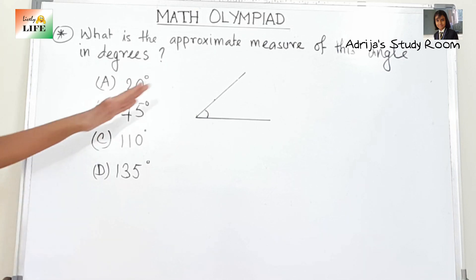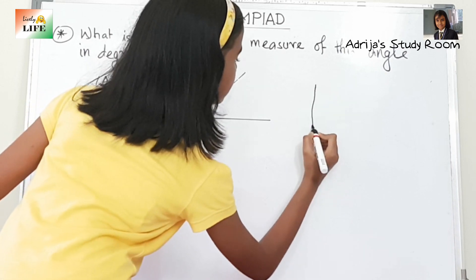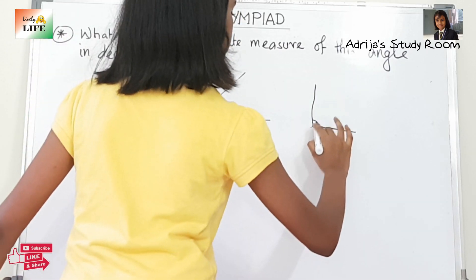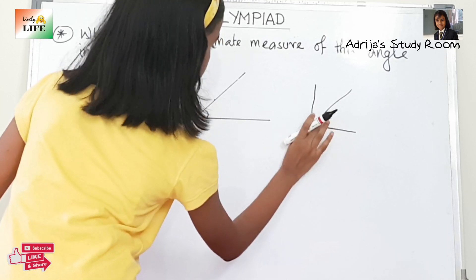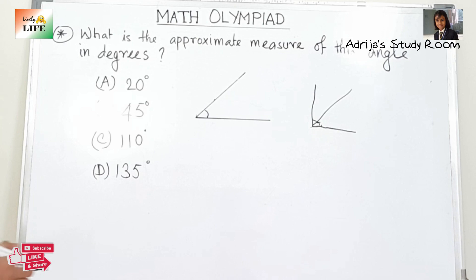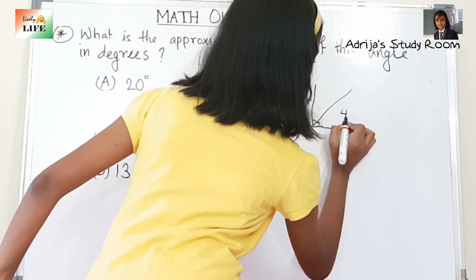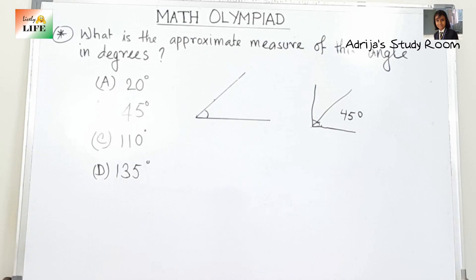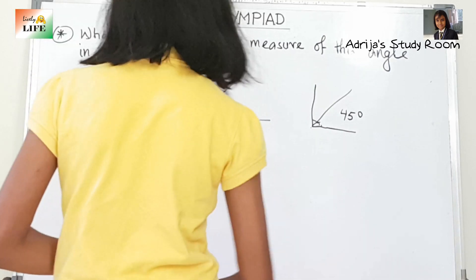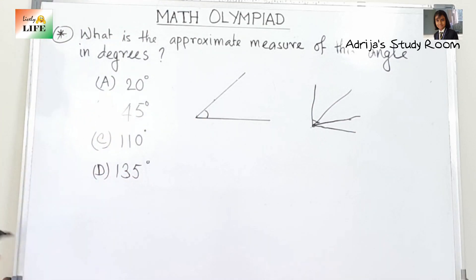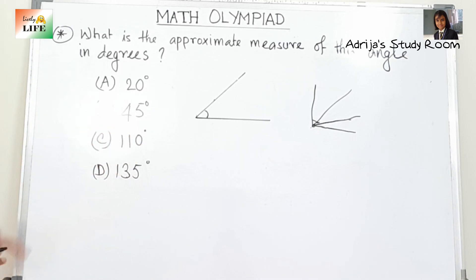If you compare it to a right angle and then make it half, that gives an acute angle of 45 degrees — since 90 divided by 2 is 45. At 20 degrees the angle would be very small, much smaller than what is shown, so 20 degrees is not possible. Therefore the answer is 45 degrees.